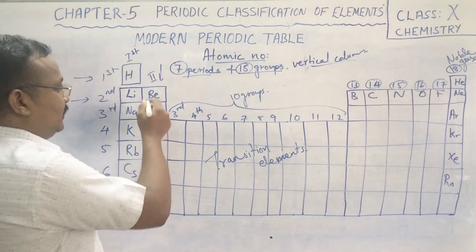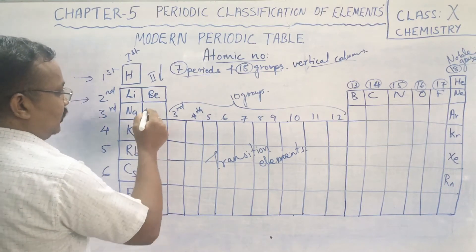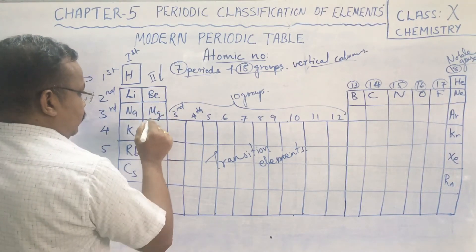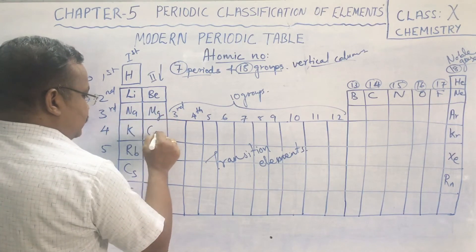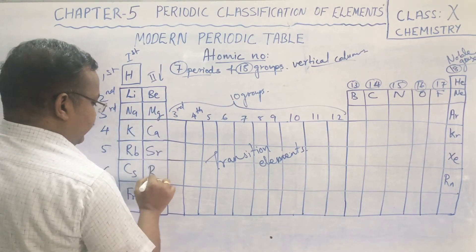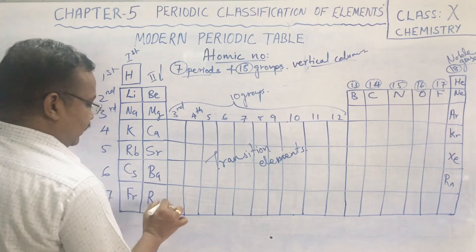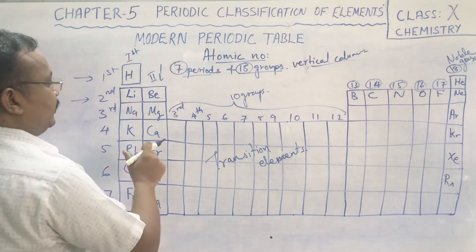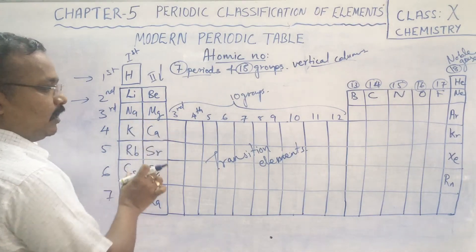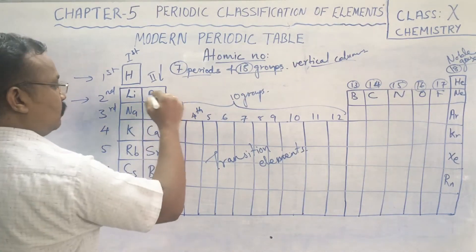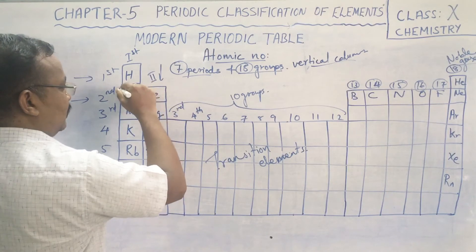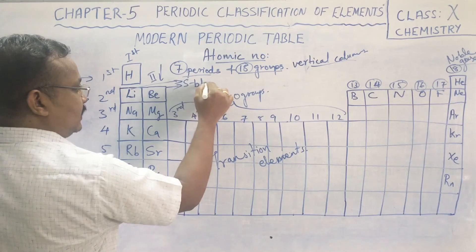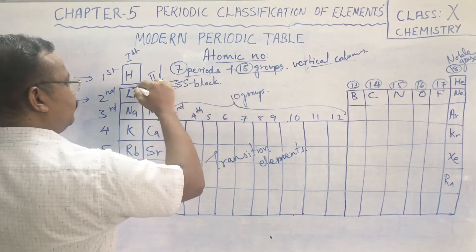In the second group we have beryllium, magnesium, calcium, strontium, barium, and radium. The first group and second group are our s-block elements — you will learn more about s-block elements later.